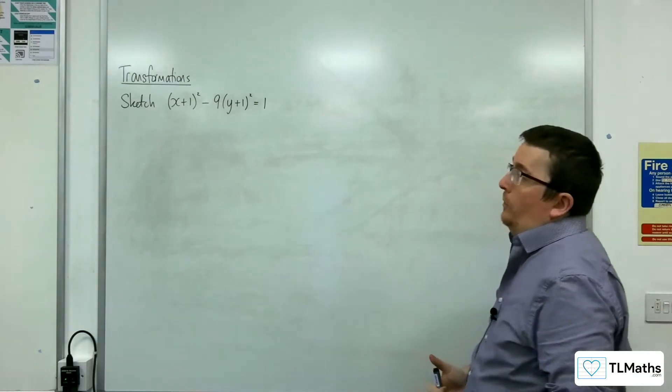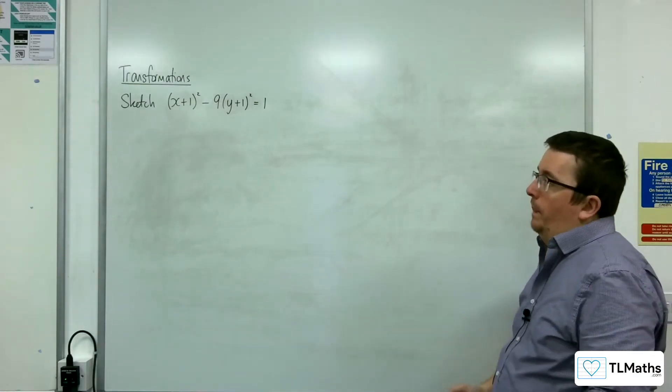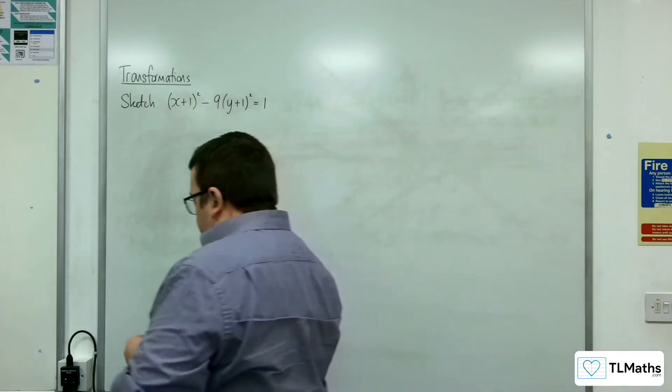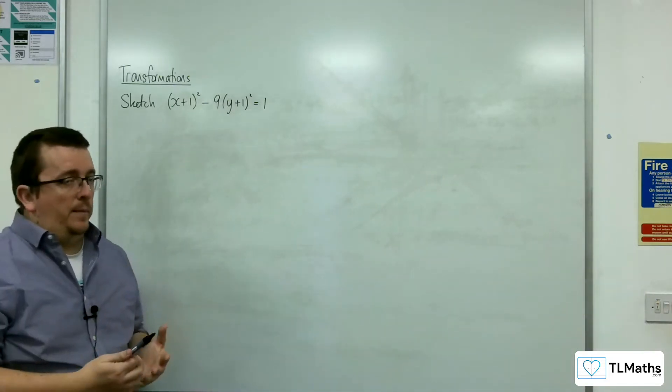In this video, I'm going to be sketching (x+1)² - 9(y+1)² = 1. First thing to do is recognize that this is a hyperbola,